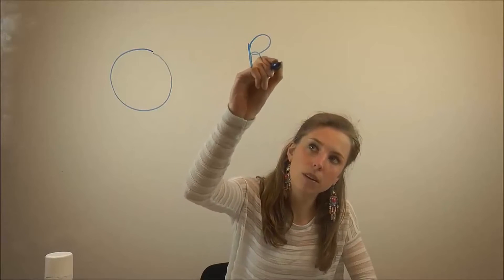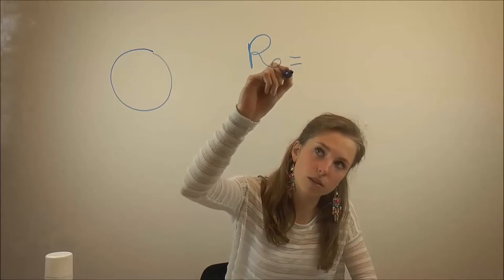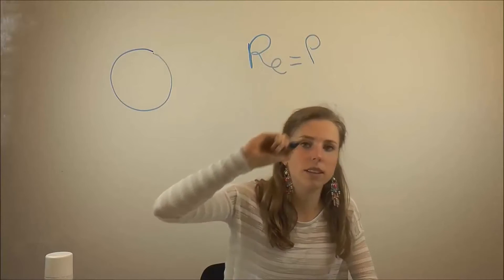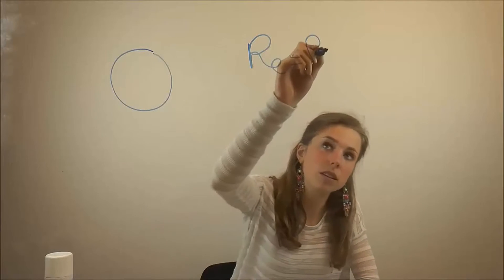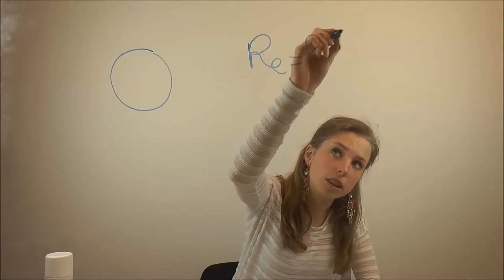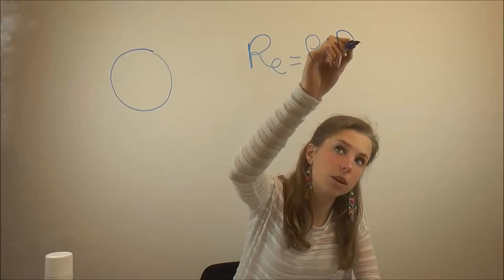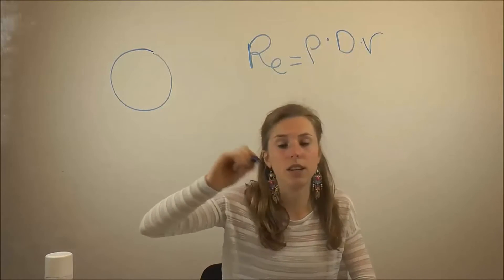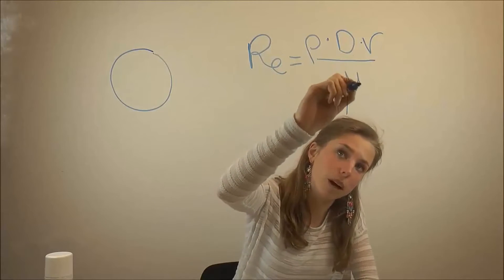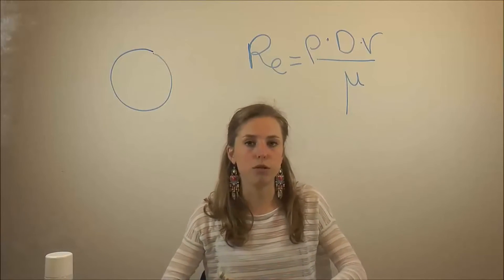Reynolds number can you calculate with this formula. You have to multiply the density of the fluid with the diameter of the sphere with the velocity of the sphere in the fluid, and you have to divide this by the viscosity of the fluid.